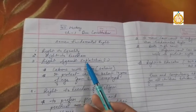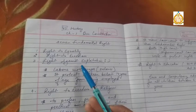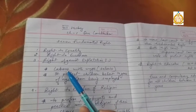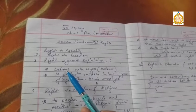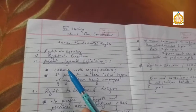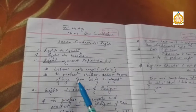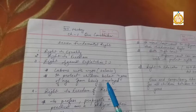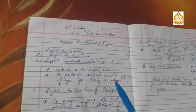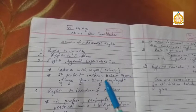The third right is the right against exploitation. This fundamental right aims at protecting individuals against exploitation and also protects the labor class. It stops slavery, beggary, or any other form of forced labor, and protects labor with wages. It also protects children below 14 years of age from being employed in any factory, mines, or any hazardous occupation.